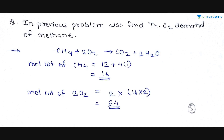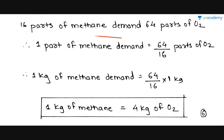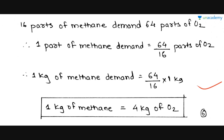So 2.75 kg of CO2 is generated while completely oxidizing 1 kg of methane. Next, we find the THOD, that is theoretical oxygen demand, of methane. The reaction is: CH4 + 2O2 → CO2 + 2H2O. The molecular weight of CH4 is 16. The molecular weight of 2O2 is 2 × 16 × 2 = 64. So 16 parts of methane demand 64 parts of O2, meaning 1 kg of methane demands 64/16 × 1 = 4 kg of O2. So the THOD is 4 kg, which is the expected answer.